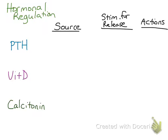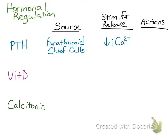PTH, or parathyroid hormone, is produced by the parathyroid chief cells, and its production and release is enhanced by a low ionized calcium, or a low free calcium concentration in blood. PTH acts to increase the blood calcium and decrease the blood phosphorus.